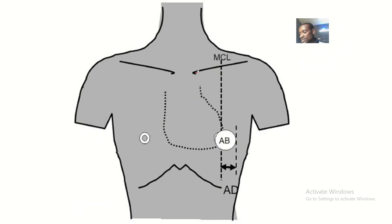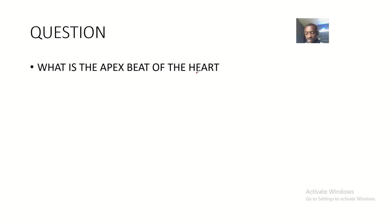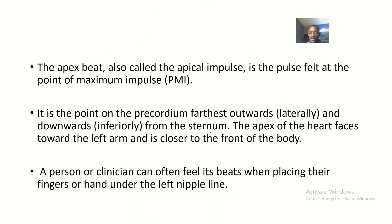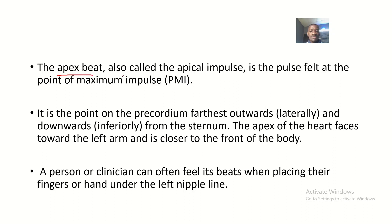We'll be talking about the apex beats of the heart — specifically, what is the apex beat of the heart. The apex beat is a beat that is actually felt at the apex of the heart, and the apex of the heart is formed by the left ventricle. The apex beat is also called the point of maximum impulse, and it is the pulse felt at the apex of the heart.